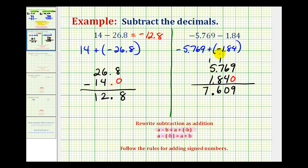But remember, we said this sum has to be negative, which is the same as this difference. So we're going to have negative 7.609. It does take some practice to get used to subtracting signed decimals, but I hope these examples helped.